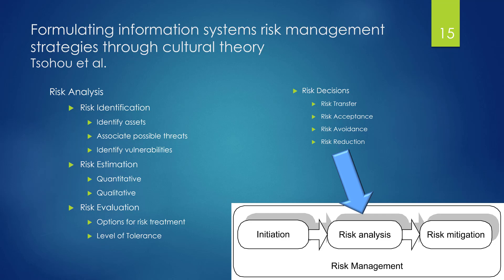Within the risk identification phase, we have to identify our assets, threats, and vulnerabilities. As we're doing risk estimation — still within the analysis phase — we're doing quantitative and qualitative analysis, looking at options for treatment and how much tolerance the organization has for risk. There are four verbs for risk treatment: can I transfer the risk to someone else? Can I accept the risk? Can I avoid the risk? Or can I reduce the risk within my organization?